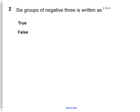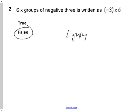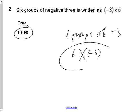Question 2 says: six groups of negative 3 is written as negative 3 times 6. The answer for this one is false, and here's why. The order of your multiplication statement is semi-important. Six groups of negative 3 is six times negative 3. So the answer is false — it's actually six times negative 3, not negative 3 times 6. On your test, I would expect to see the answer false, and then something like 'it's actually six times negative 3.'